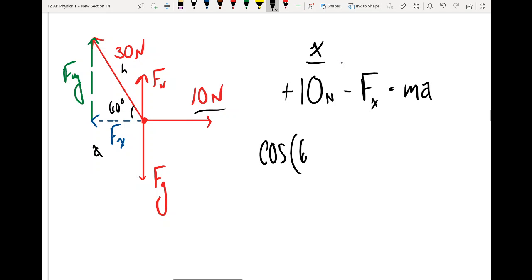So cosine of my angle 60 is equal to adjacent Fx over the hypotenuse 30. I can multiply both sides by 30 and say 30 cosine of 60 is equal to Fx.